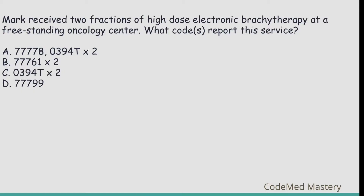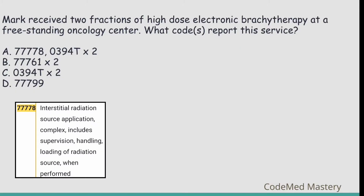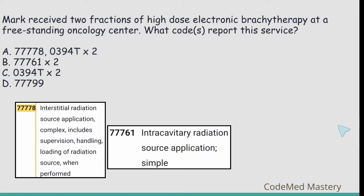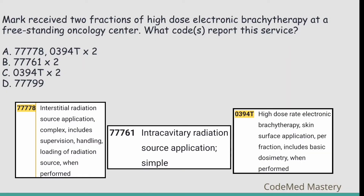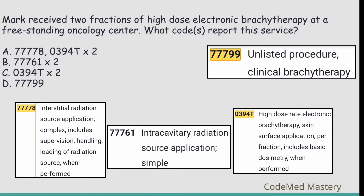Check option A: 77778 — for interstitial radiation source application, complex, includes supervision, handling, loading of radiation source when performed. Option B: 77761 — for intracavitary radiation source application. Option C: 03940 — for high dose rate electronic brachytherapy, skin surface application, per fraction, includes basic dosimetry when performed. Option D: 77799 — unlisted procedure, clinical brachytherapy.